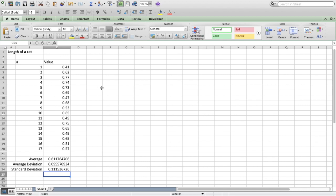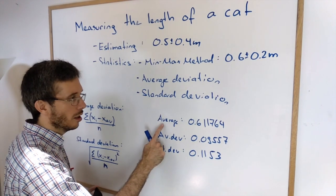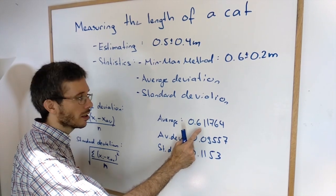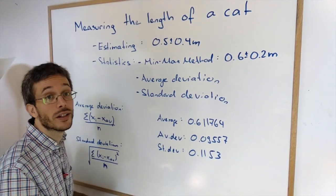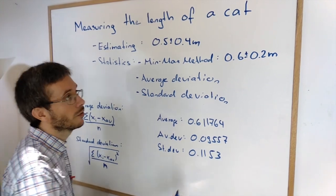Now let's go back to the board. So we're back from Excel. I copied over the average Excel gave me. I copied over the average deviation and the standard deviation. Now what do we have to do?